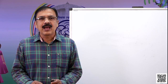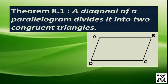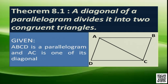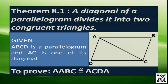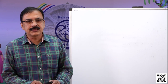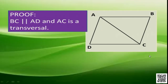Whenever we draw a diagonal of a parallelogram, we can see two triangles. Here, ABCD is a parallelogram and AC is one of its diagonals. We have to prove that the triangles so formed are congruent, meaning triangle ABC is congruent to triangle CDA. Now, BC is parallel to AD and AC is the transversal. So we have two alternate interior angles: angle BCA and angle DAC. These are a pair of alternate interior angles, so they are equal.